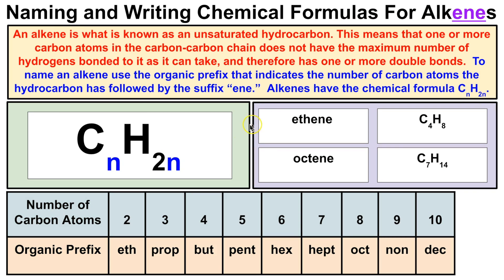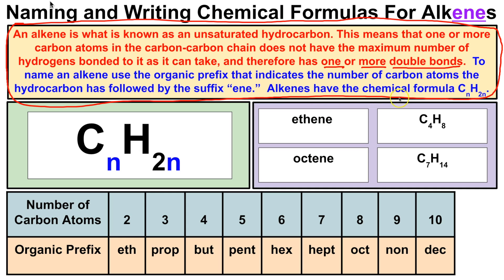Now let's learn how to name and write chemical formulas for a different type of hydrocarbon called an alkene. An alkene is an unsaturated hydrocarbon. This means that one or more of the carbon atoms in the carbon-to-carbon chain does not have the maximum number of hydrogens bonded to it and therefore has one or more double bonds. To name alkenes, use the organic prefixes followed by the suffix '-ene'. Alkenes have the chemical formula CₙH₂ₙ.